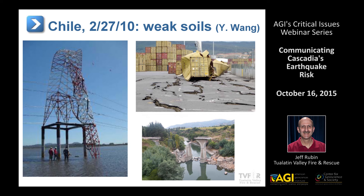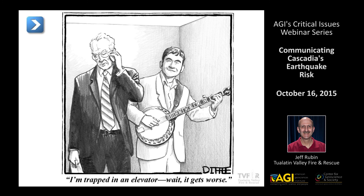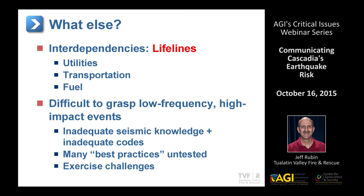One reason the Oregon Resilience Plan looked at a 50-year perspective is that we can't suddenly change all our infrastructure. Going forward, the question is how we prioritize when we build new or replace existing. It actually gets worse because of secondary effects. A lot of it comes down to lifelines — we have many interdependent lifelines: water, wastewater, electricity — and many vulnerabilities in the most densely populated part of the state.